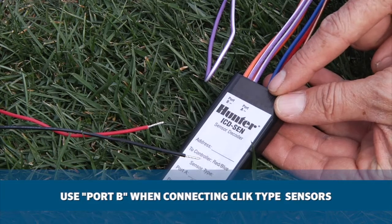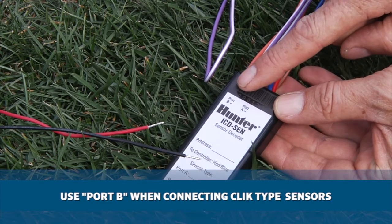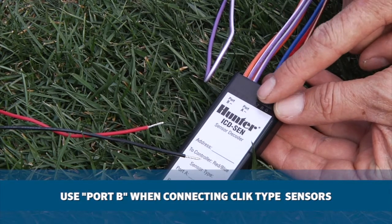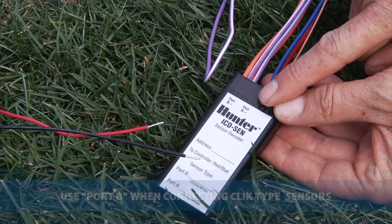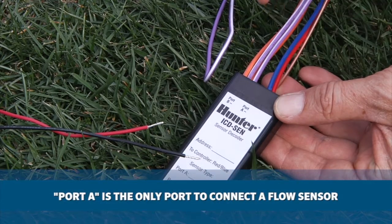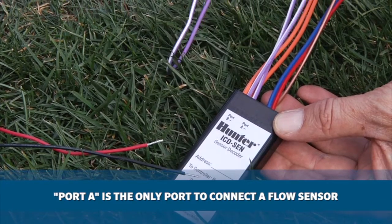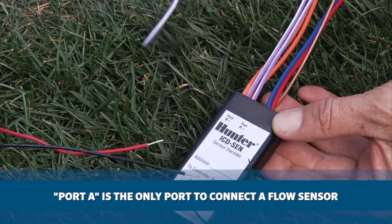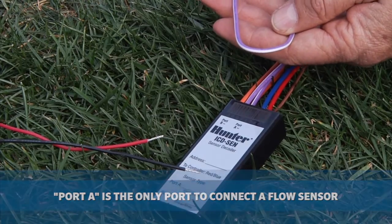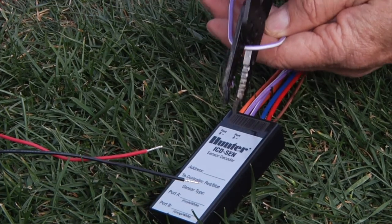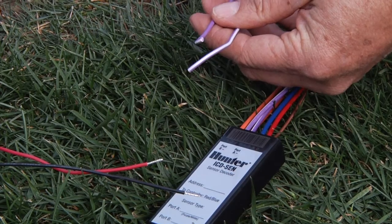The sensor decoder has two ports, A and B. Port B is used to connect click type sensors, such as a rain click sensor. Port A can also be used to connect a rain sensor, but this is the only port that allows you to connect a flow sensor. When you connect a flow sensor through a sensor decoder, be sure to use the looped purple wires and that you observe polarity.